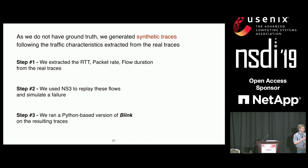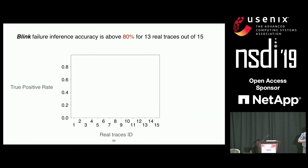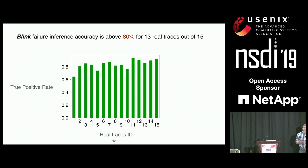Here is the accuracy of Blink. On the x-axis are each real trace we used; results are shown per trace since each has different traffic patterns — different RTT distributions and different proportions of active versus inactive flows. On the y-axis is the true positive rate: how often Blink inferred a failure out of all failures simulated with NS3. We are very often above 80% accuracy. The best case is 94%, and the worst case is still 65%, which is still relatively good and would make Blink efficient even in that case.